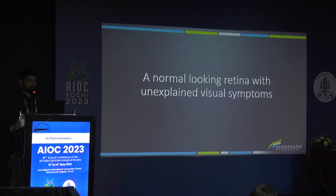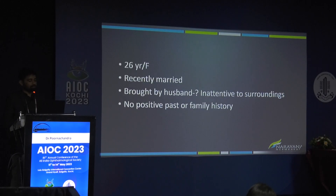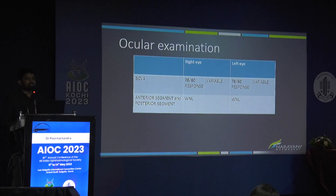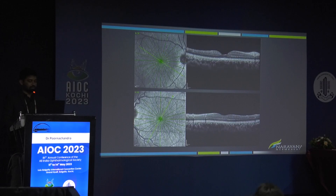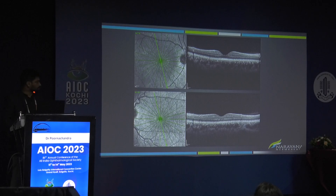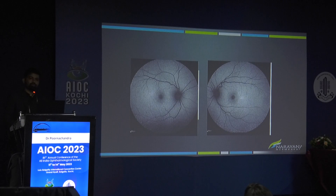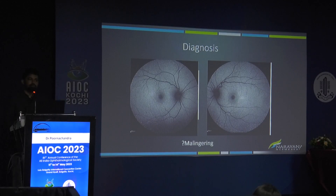A 26-year-old recently married female was brought by her husband because she was inattentive to surroundings. She denied any visual problems and was reluctant to be tested. No positive family history was found. OCT cross-sections were completely normal across all layers, and autofluorescence was also normal. Before labeling any patient as malingering, electrophysiological testing must be performed.